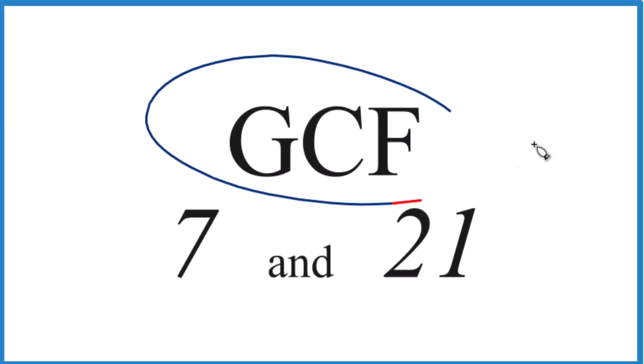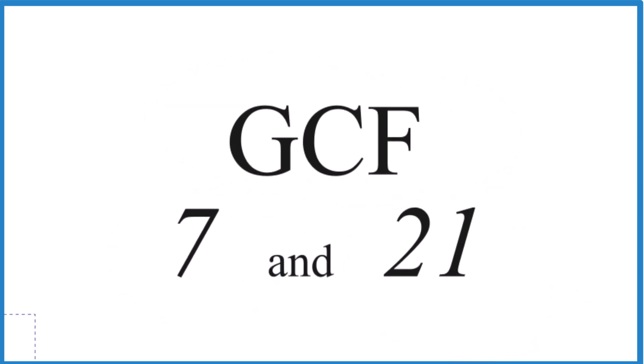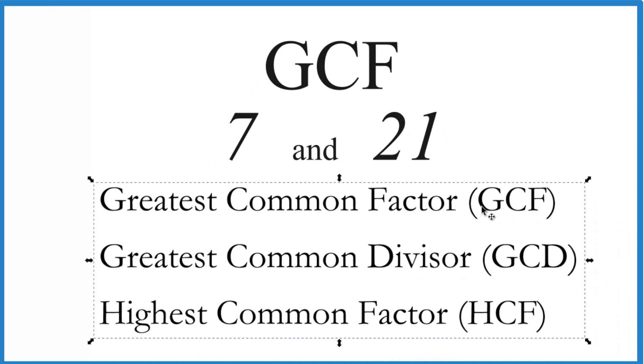All right, let's find the GCF, the greatest common factor for 7 and 21. So the greatest common factor is called the GCF, but it's also called the greatest common divisor or highest common factor. These are all the same thing. I like GCF. Let's do that.